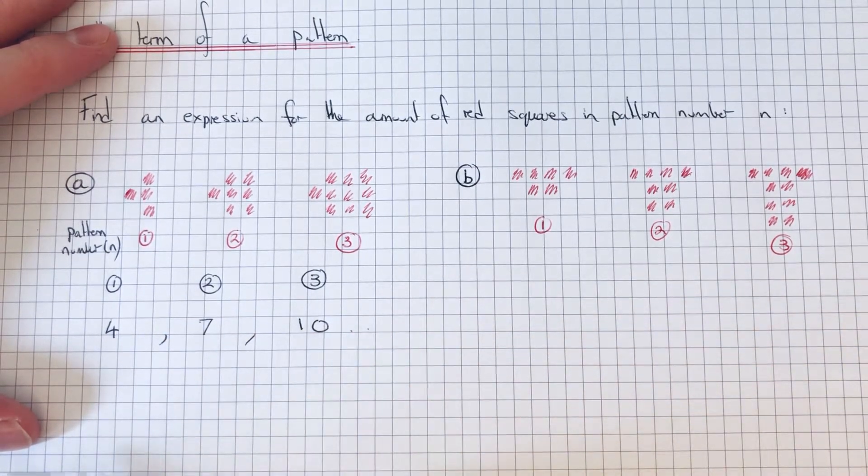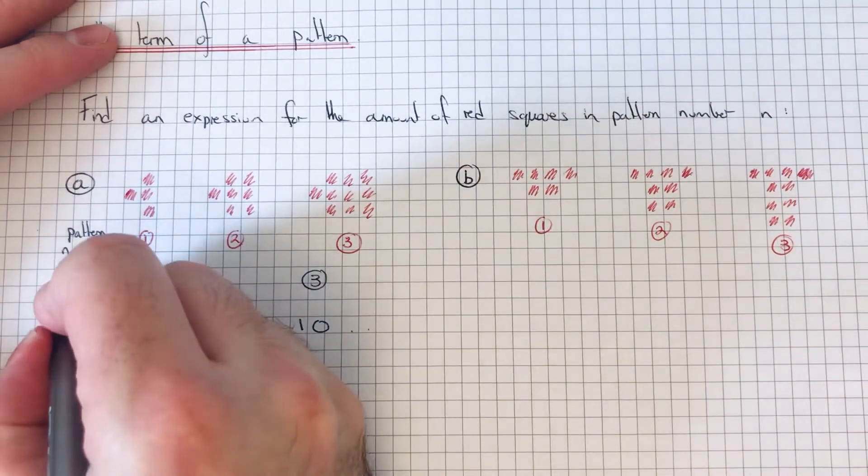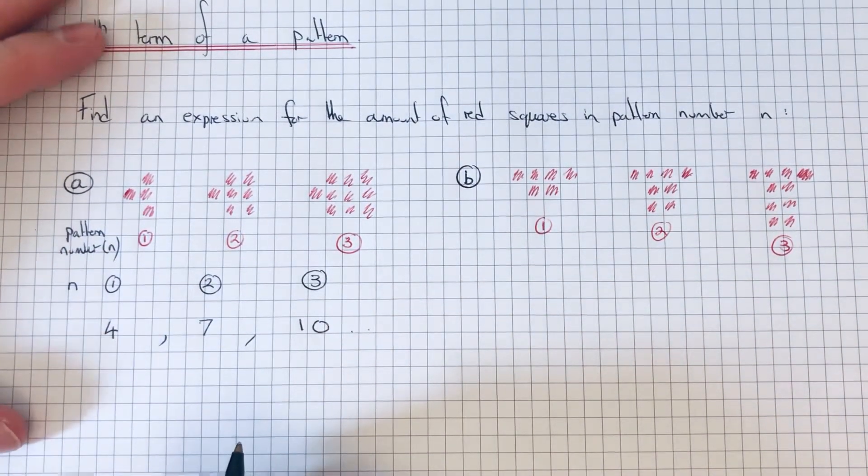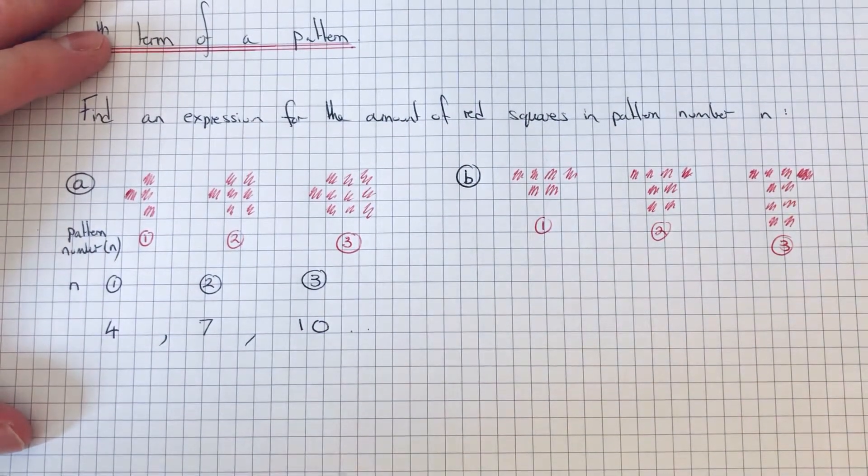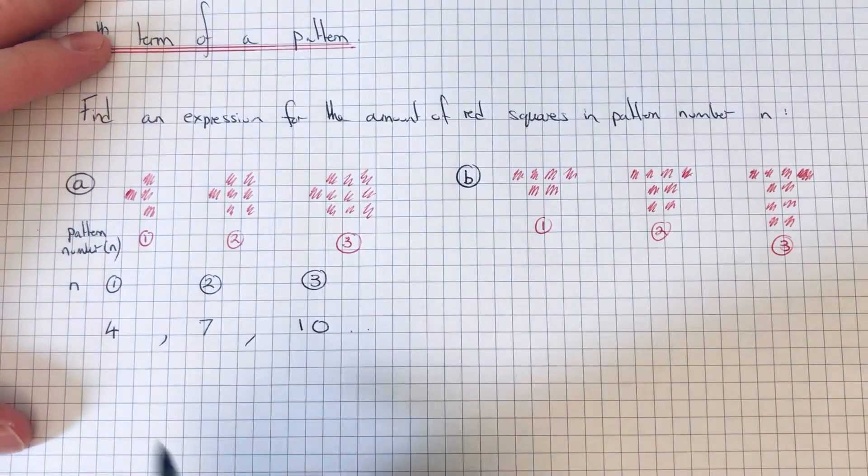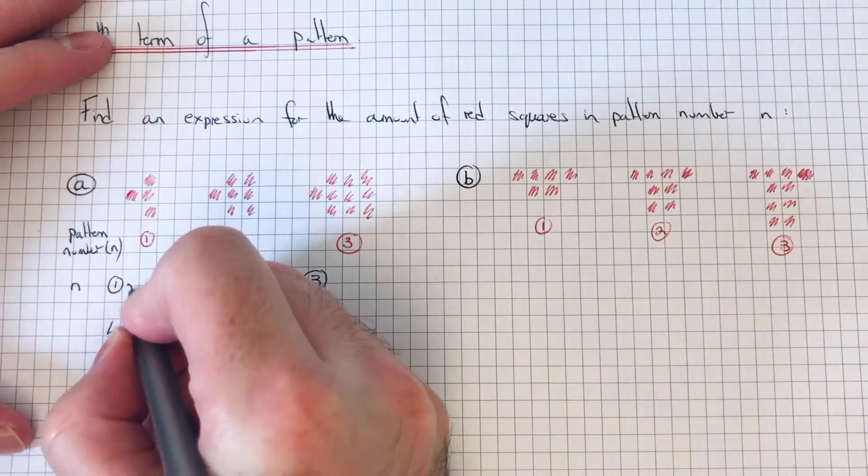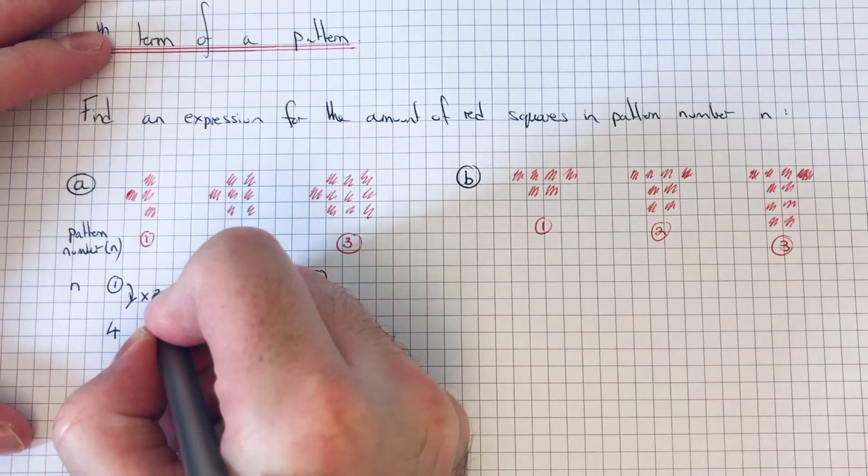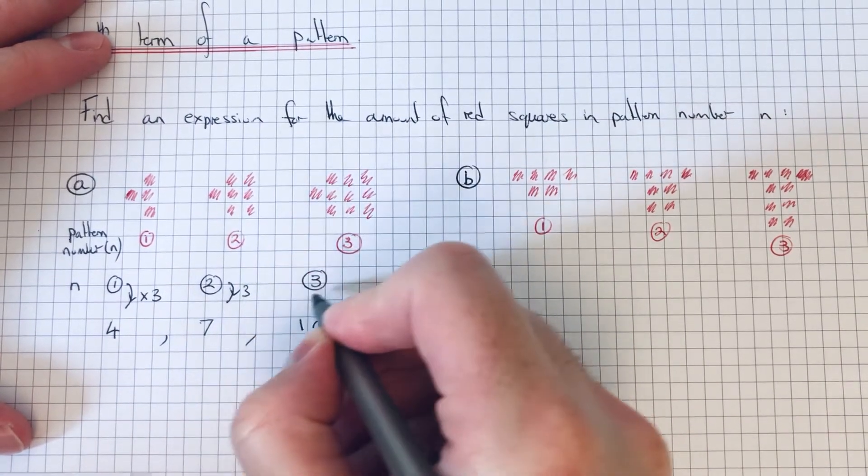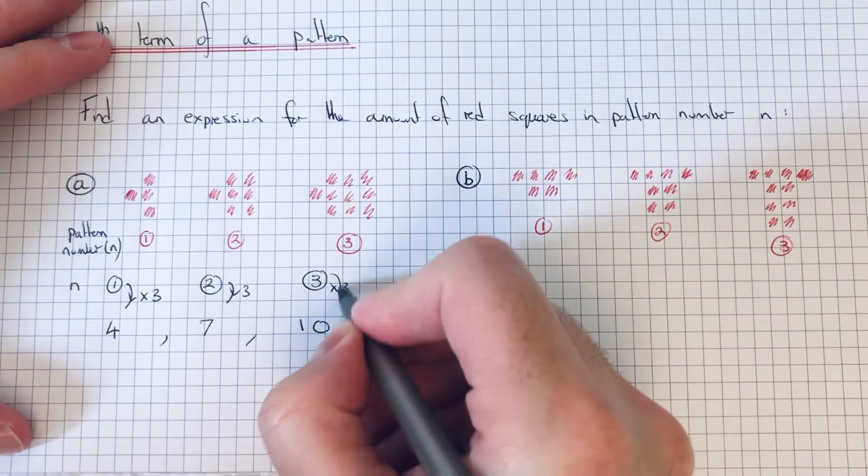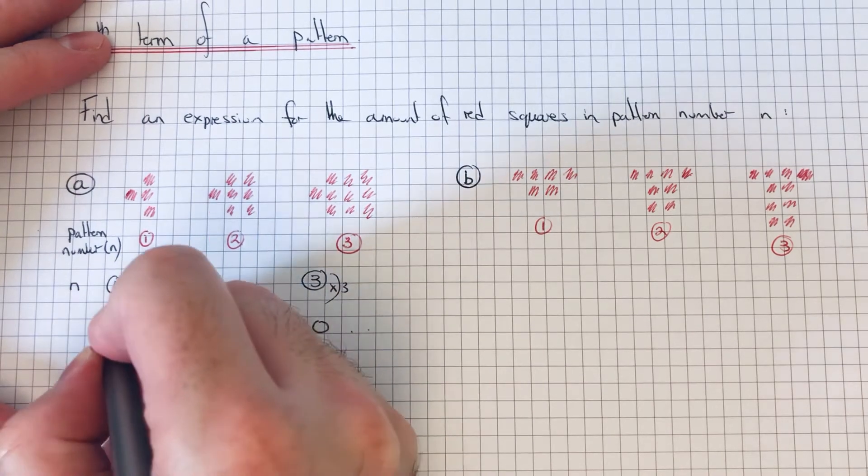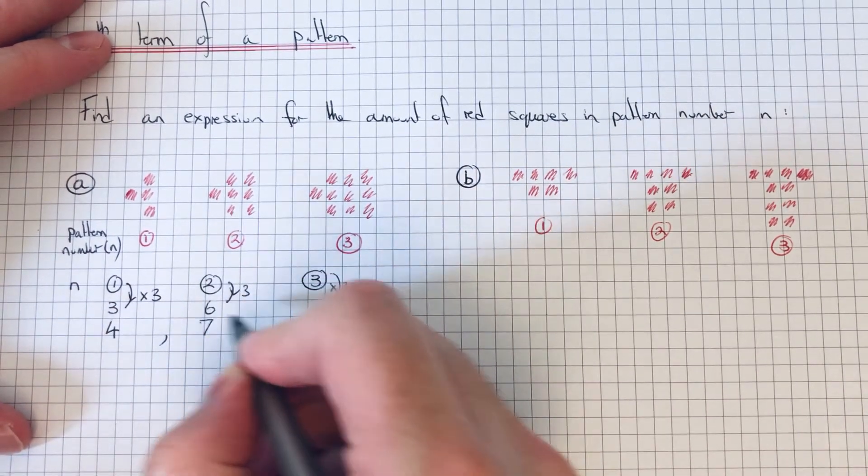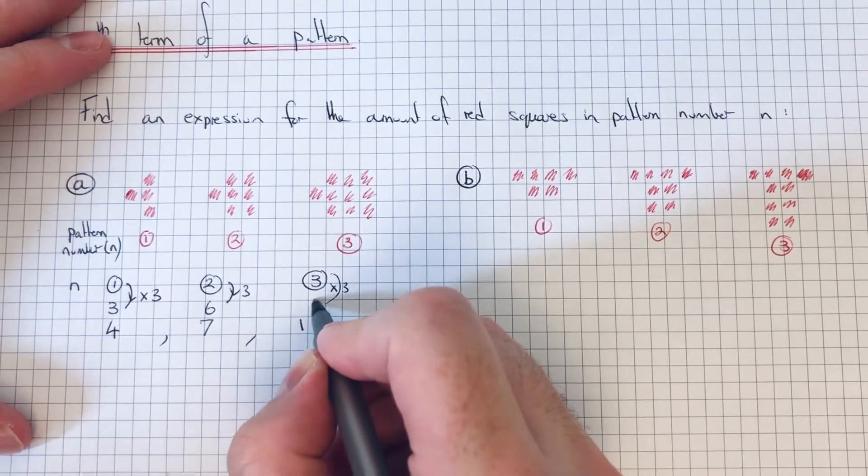This tells us that the nth term has something to do with the three times table. So what I'm going to do is multiply the pattern numbers by 3. So 1 times 3 is 3, 2 times 3 is 6, 3 times 3 is 9.